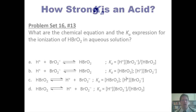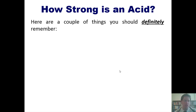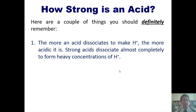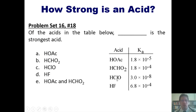How strong is a specific acid? A few things to remember: first, the more an acid dissociates to make H+, the more acidic it is. Strong acids dissociate almost completely to form heavy concentrations of H+. Second, the larger the Ka value, the greater the H+ concentration an acid produces — in other words, the larger the Ka value, the stronger the acid. Of all the acids shown in this table, which one is the strongest? Whichever one has the largest Ka value will be the strongest acid.